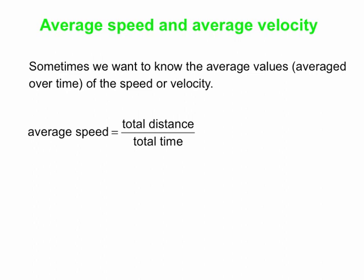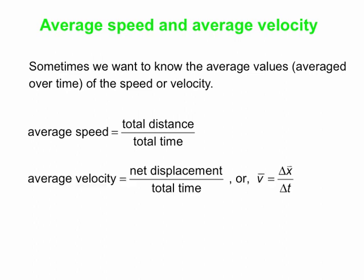The average speed is the total distance covered divided by the total time. Your average velocity, on the other hand, is your net displacement. The magnitude of the net displacement may or may not equal the total distance traveled — if there were any changes in direction, the net displacement is smaller than the total distance. Only if there's no change in direction will the magnitude of the net displacement equal the total distance. In compact form, average velocity V-bar equals delta x divided by delta t.